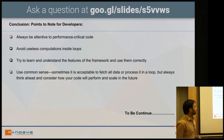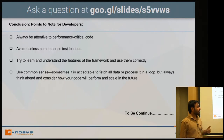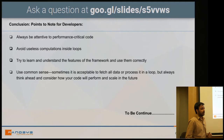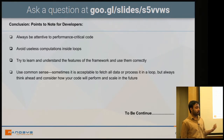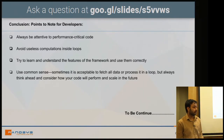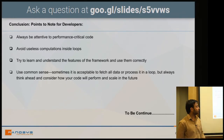We should avoid useless computations inside loops — for example, loading models every time inside a loop. Avoiding this will significantly improve Magento performance. Also, try to learn and understand the features of the framework and use them correctly. Magento is an e-commerce platform written in PHP, but instead of writing raw PHP directly, we should understand what the framework provides and write code that utilizes its features and performance benefits.